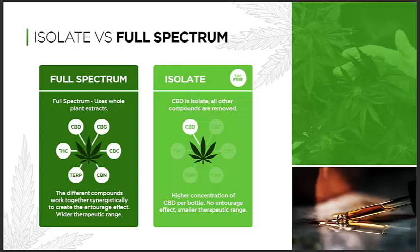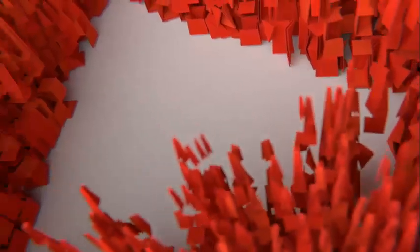But let's say you're trying out for the Olympics and you can't risk having traces of THC, so you want to go with the isolate. On the isolate side, all the other compounds are removed, leaving only CBD.